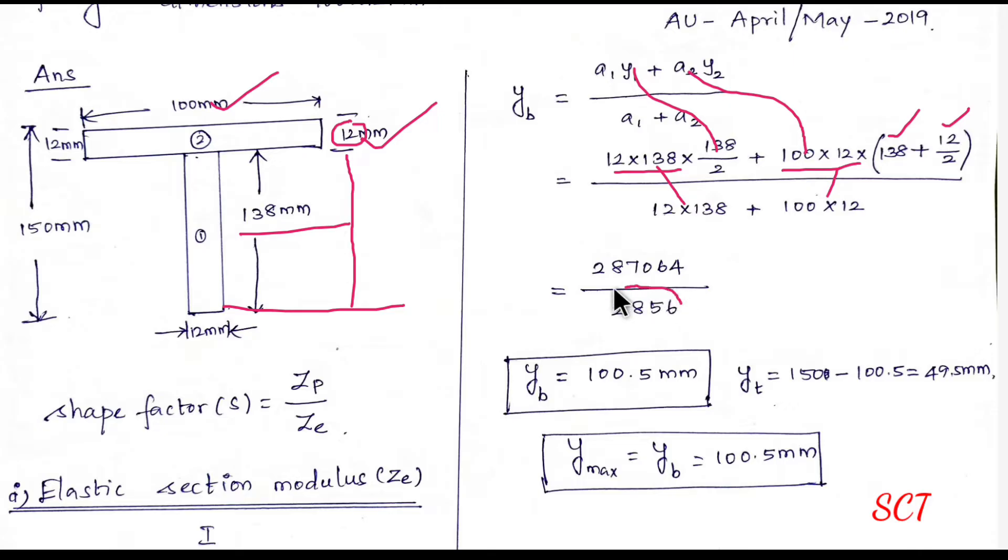We calculate the A value for the plastic section. That's why we go 2 steps. We multiply the value above and add the value above. This is the total area value. If we solve the value of YB, it is 100.5 mm.